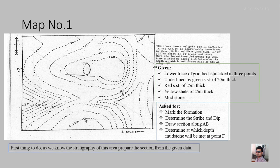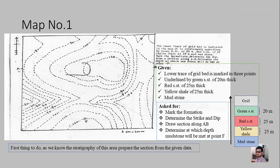To solve the question, the very first thing to do is prepare a stratigraphic section from the given stratigraphy. We know we are at the grey sandstone contact. Below grey sandstone is green sandstone of 20 meters, followed by red sandstone of 25 meters, then yellow shale of 25 meters, and the last bed is mudstone. In a stratigraphic section, the thickness of the bottommost and topmost formations is unknown since we don't know their boundaries. The arrow indicates oldest to youngest.